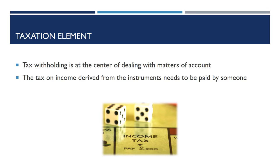Connected to valuable instruments as well as accounts is a taxation issue. Tax withholding is at the center of dealing with matters of account. Income connected to instruments or an account has a tax associated with it. The tax on income derived from the instruments needs to be paid by someone.